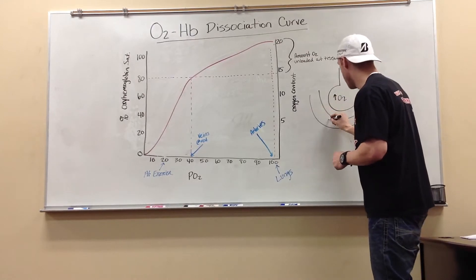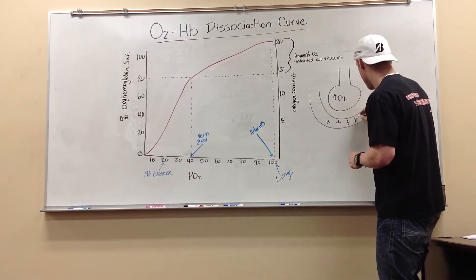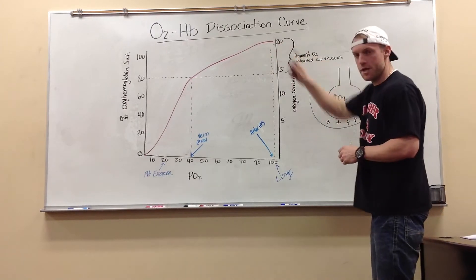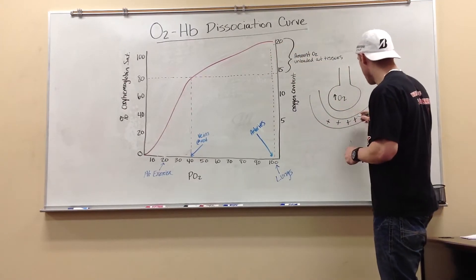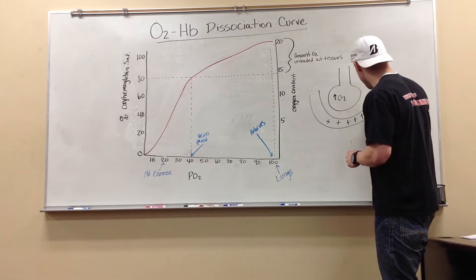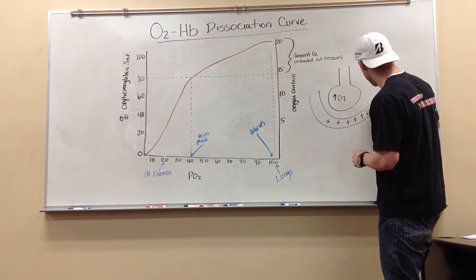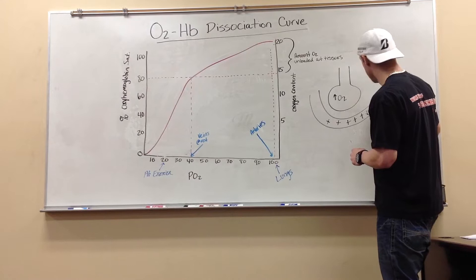This is our blood. Here we have our hemoglobin. Hemoglobin is HB. We have low oxygen partial pressure in here. So, low oxygen PO2.